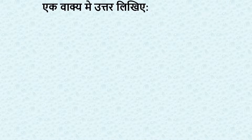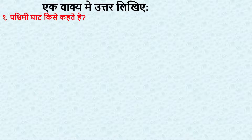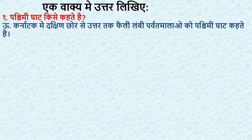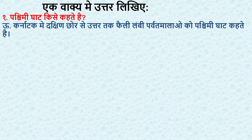The first section is: answer in one sentence. First question — Paschimi Ghaat kise kehte hai? What is Western Ghats? Answer: Karnataka mein dakshin chhol se uttar tak faili lambi parvat maalau ko Paschimi Ghaat kehte hai. In Karnataka, the long ranges extending from the south end to the north are called Western Ghats.